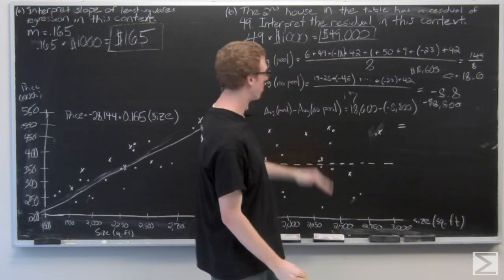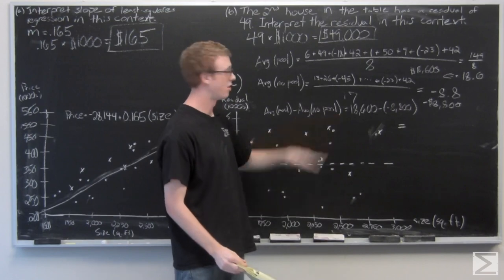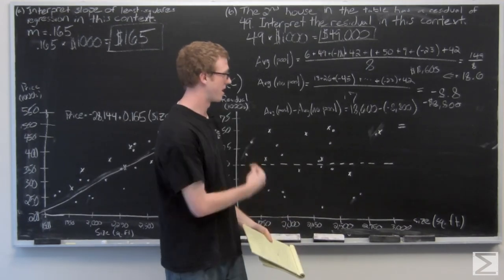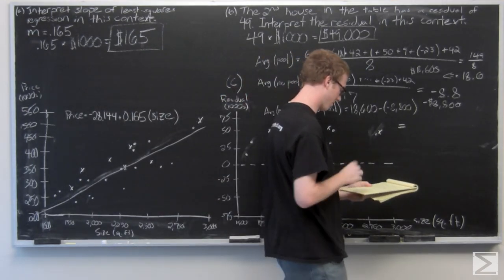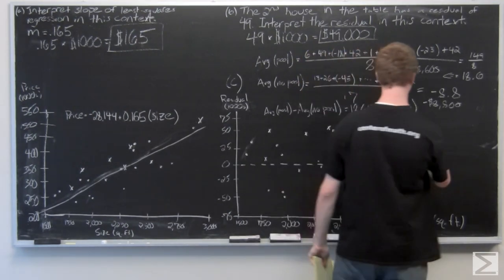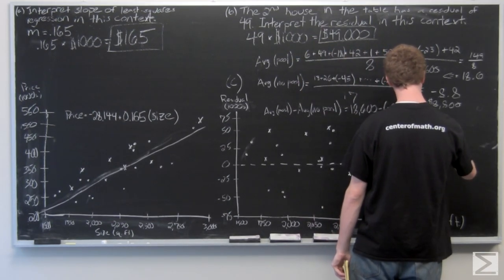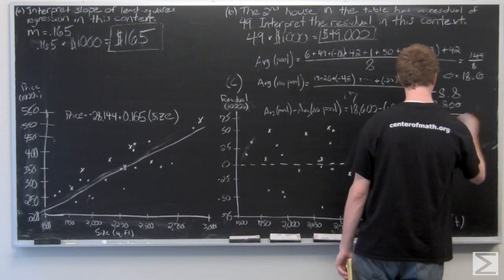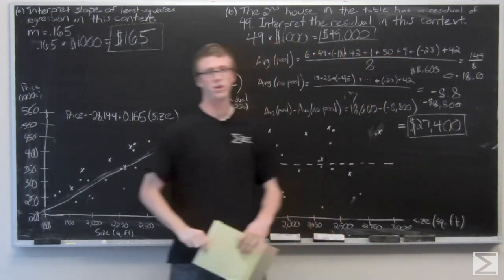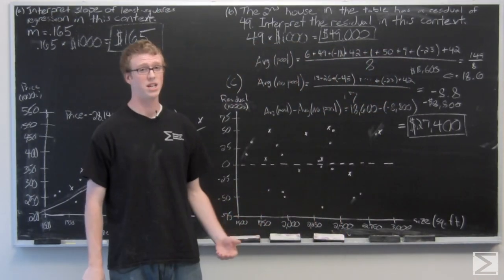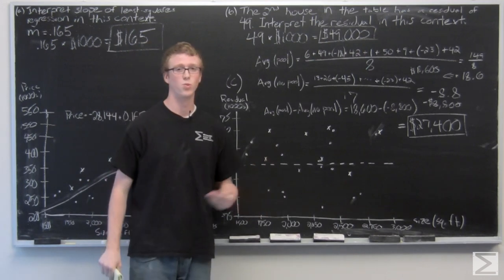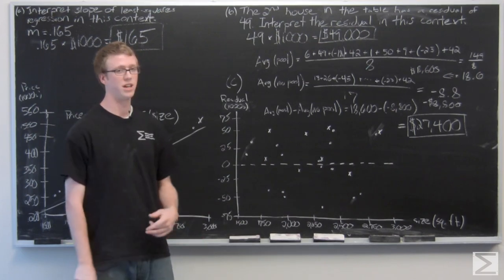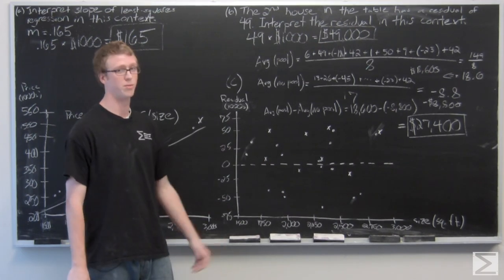We have the average with-pool minus the average no-pool: 18,600 minus negative 8,800, which makes a plus. The final result is $27,400. So on average, for houses of the same size, the house with a swimming pool would cost $27,400 more than the house without a swimming pool of the same size.